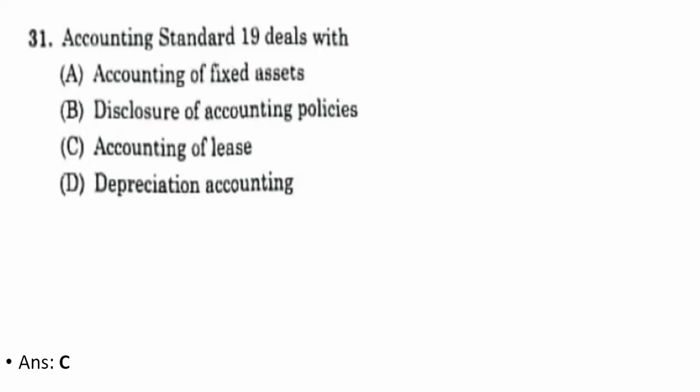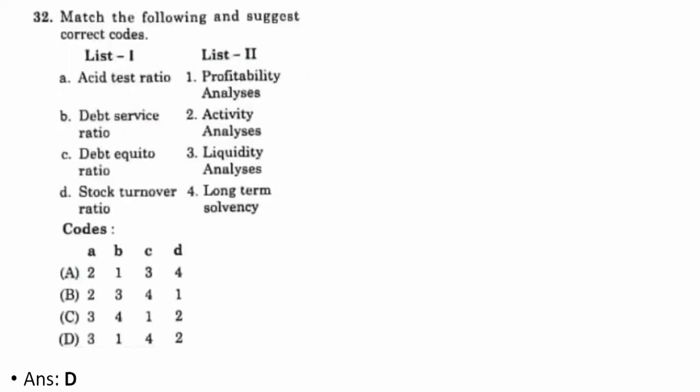Thirty-first question: Accounting Standard 19 deals with accounting of leases. The correct option is C. Thirty-second question — match ratios to their analysis type: acid test ratio is related to liquidity analysis; debt service ratio is related to profitability analysis; debt-equity ratio is related to long-term solvency; stock turnover ratio is related to activity analysis. The correct option is D.